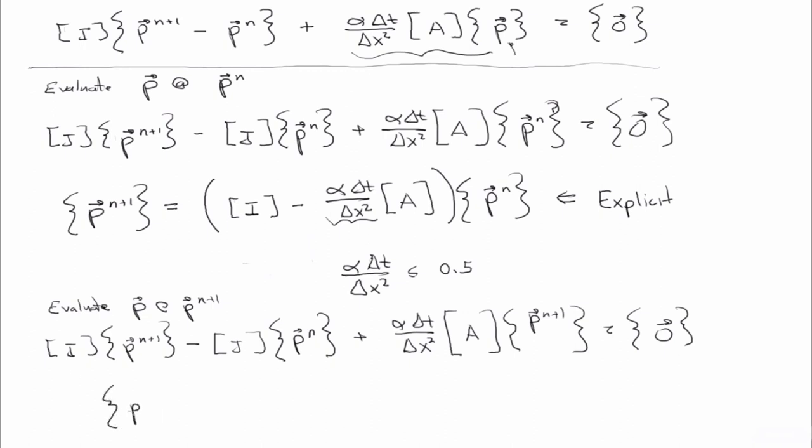So, now, if we solve this guy for p at n plus 1, we end up having to solve the linear system of equations, and what I mean by that is we have to invert a matrix. So this is a matrix here, and we have to take its inverse. And multiply by p at n, and this is what we call the implicit method.